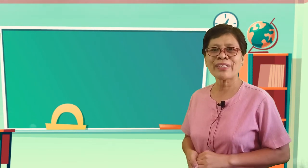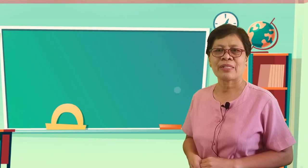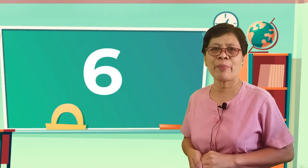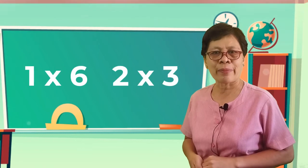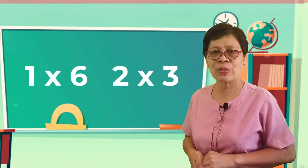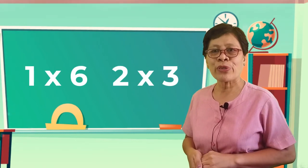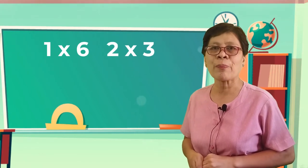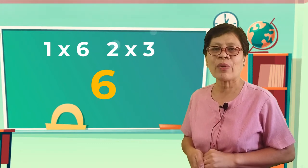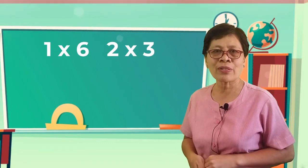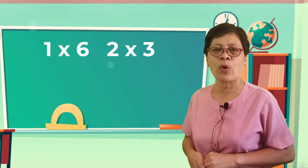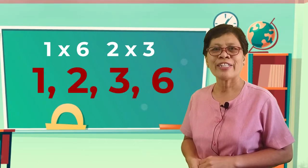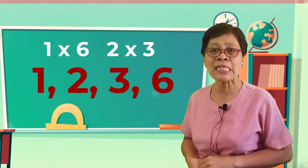Same with the other composite numbers. Let's have six. The factors of number six are one times six, two times three. For these are the only factors to arrive at the product six. Then, we arrange the factors in increasing order. So, we have one, two, three, and six.